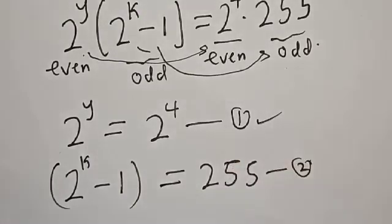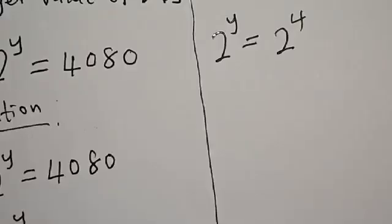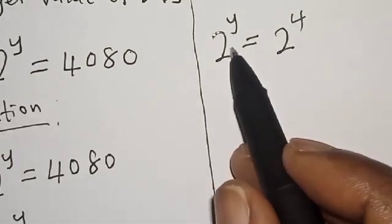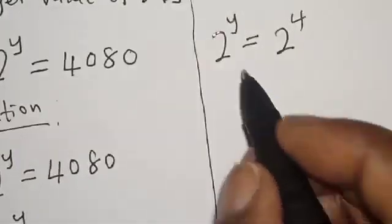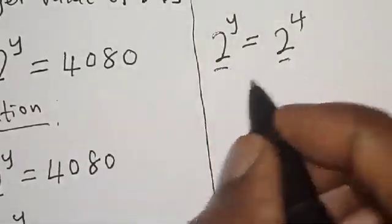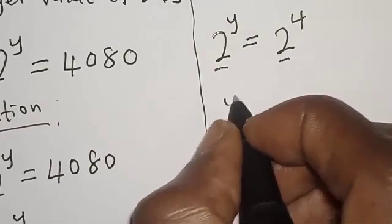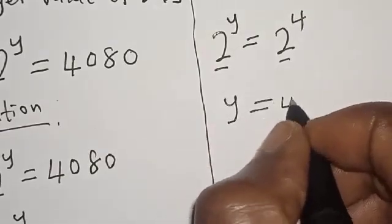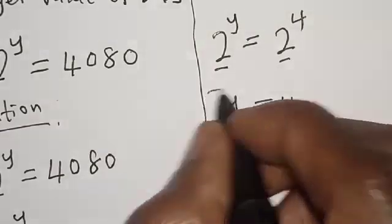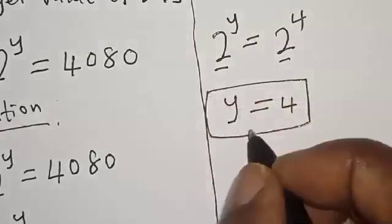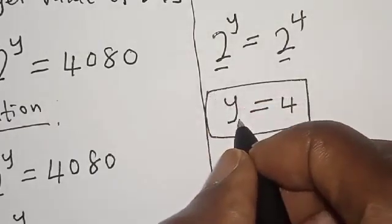Now let's work with equation 1. From 2 raised to power y is equal to 2 raised to power 4 — they have the same base — so y is equal to 4. That is the value of y.